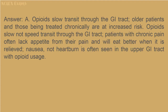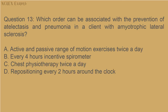Answer: A. Opioids slow transit through the GI tract; older patients and those being treated chronically are at increased risk. Opioids do not speed transit through the GI tract. Patients with chronic pain often lack appetite from their pain and will eat better when it is relieved. Nausea — not heartburn — is often seen in the upper GI tract with opioid usage.